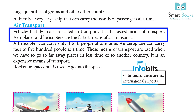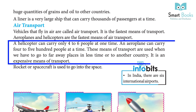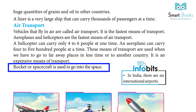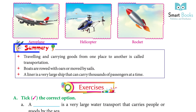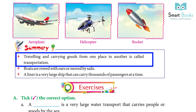A liner is a very large ship that can carry thousands of passengers at a time. Air transport: vehicles that fly in the air are called air transport. It is the fastest means of transport. Aeroplanes and helicopters are the fastest means of air transport. A helicopter can carry only four to six people at one time. An aeroplane can carry four to five hundred people at a time. These means of transport are used when we have to go to faraway places in less time or to another country. It is an expensive means of transport. A rocket or spacecraft is used to go into space. In India, there are six international airports.